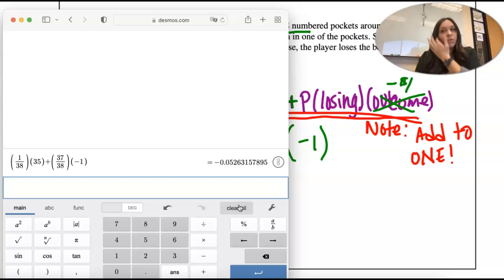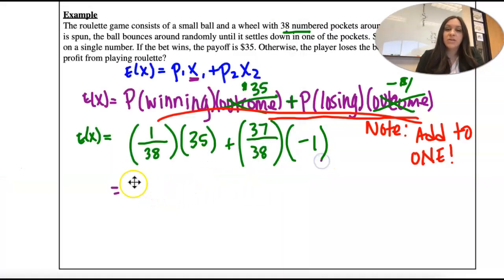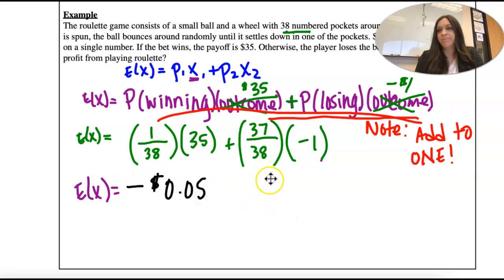Okay, so we're talking about money, so I'm going to round to the nearest cent. So negative expected value is negative 0.05. So this number is less than 0.